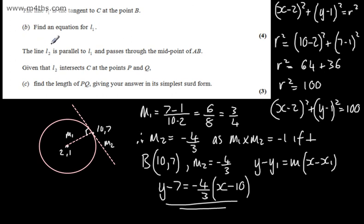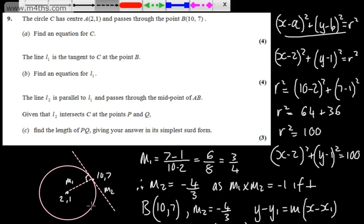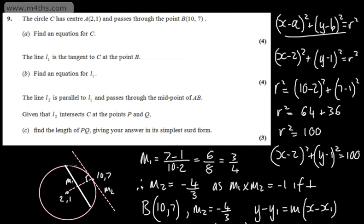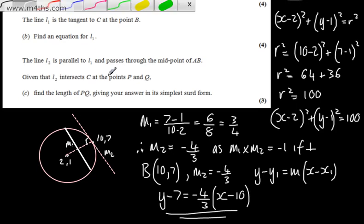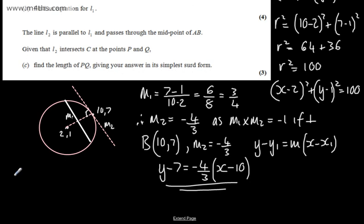We're now told line L2 is parallel to L1 and passes through the midpoint of AB. Given that L2 intersects C at points P and Q, in part C we're asked to find the length PQ in simplest surd form for 3 marks. The midpoint of AB is ((10 + 2)/2, (7 + 1)/2) = (6, 4).